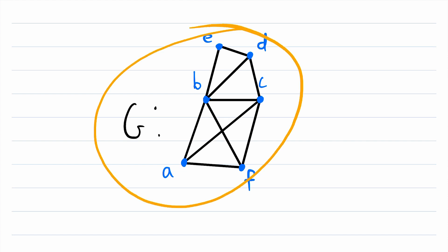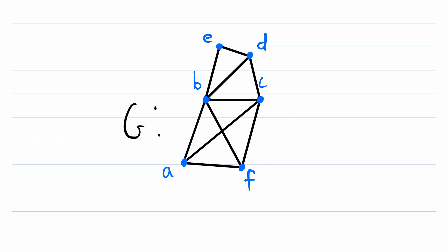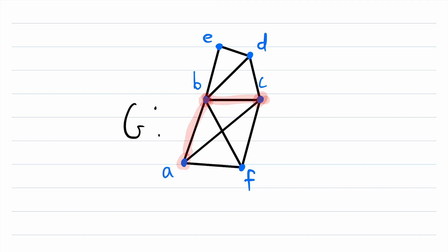Here is our graph G that we'll be working with today. I'm going to assume that you already know what a clique is, but if you don't, be sure to check out my video lesson on it — I'll leave a link in the description. For a quick one-sentence recap: a clique in a graph is a set of vertices that are all adjacent to each other. It's also sometimes defined as a complete subgraph. So for example, A, B, and C form a clique because they are all adjacent to each other.